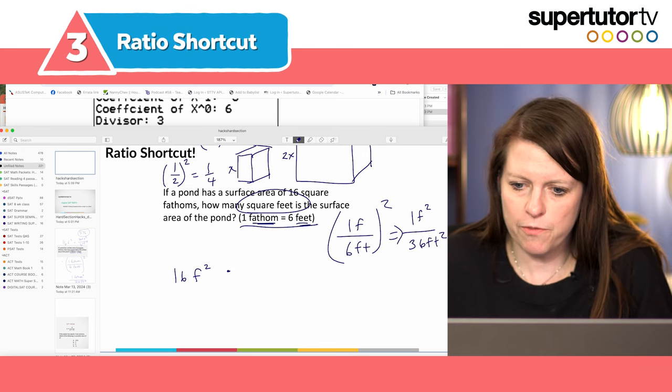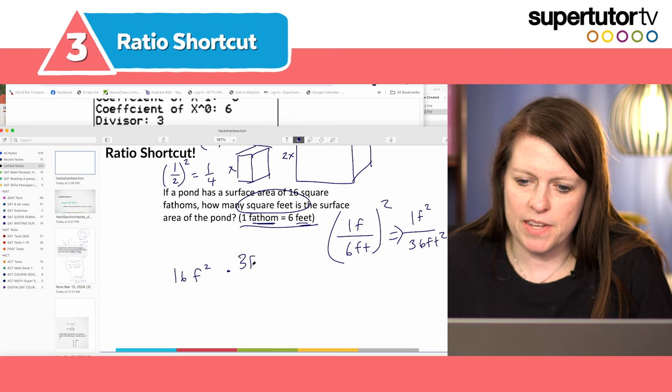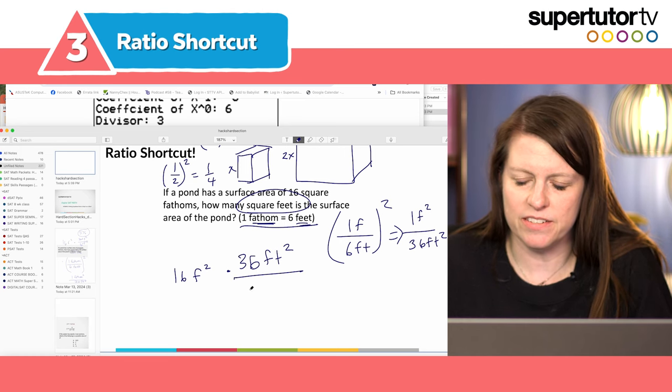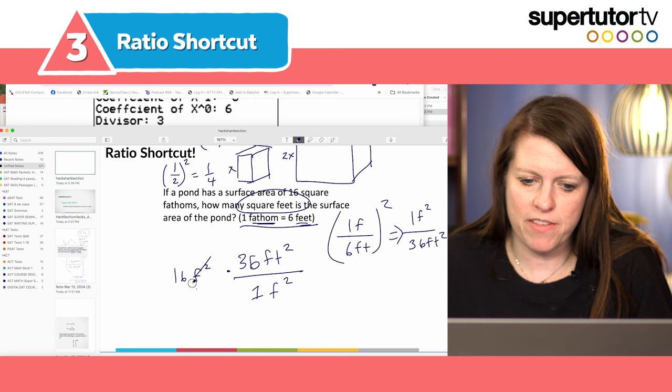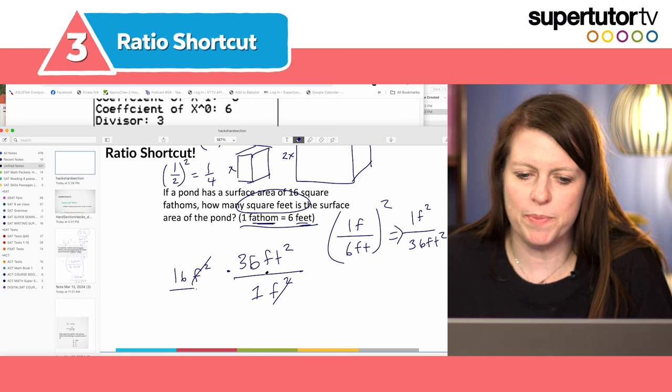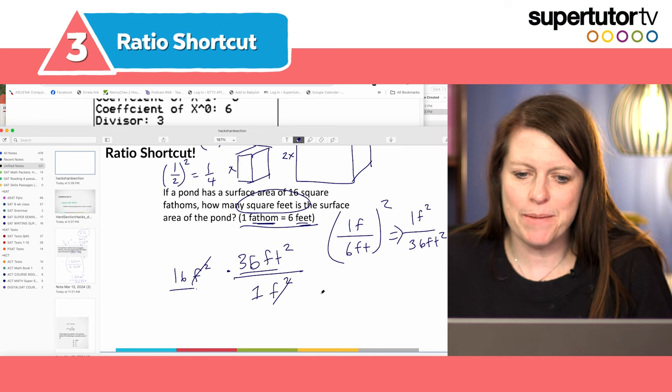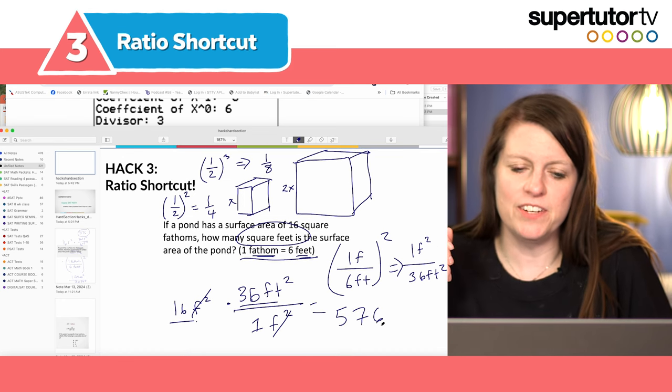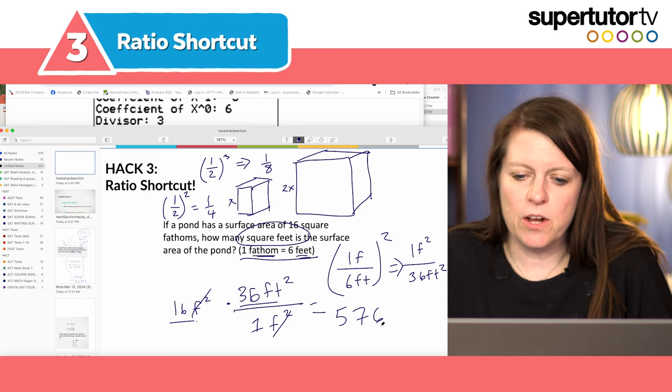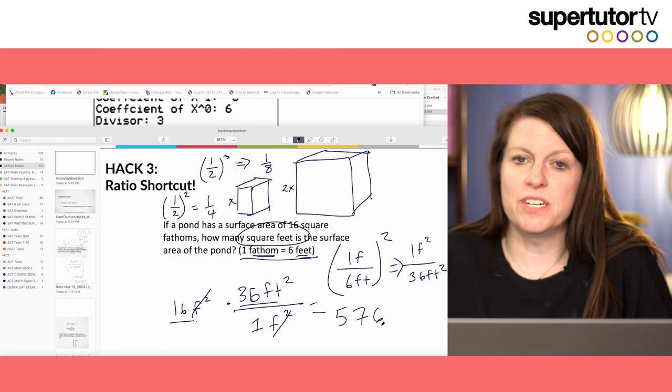So now I'm going to flip this upside down because I want the 36 on the top right. I'm just using dimensional analysis here if you guys remember that if that rings a bell maybe from chemistry class right. My fathom squared cancel and I'm just going to multiply 16 times 36. I can do that in calculator. It's just 576 and we're done. And that's how we solve that ratio shortcut.